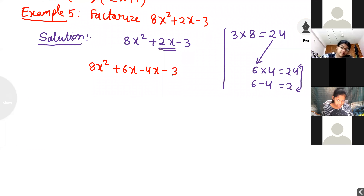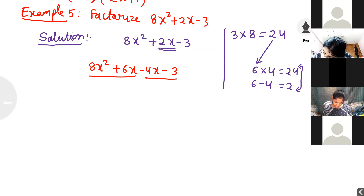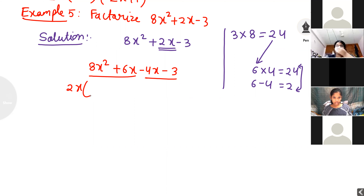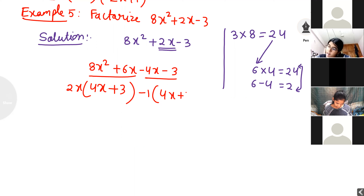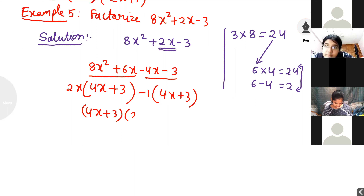I write 8x squared plus 6x minus 4x minus 3. Some students say they want to write plus — but 6 plus 4 is 10, not 2; we need subtraction to get 2. In the first group, 2x is common: 2x times (4x plus 3). For the second group, there is no variable common, so I take minus 1 common — all signs in the second group change, giving minus 1 times (4x plus 3). Both brackets are the same. The answer is (4x plus 3)(2x minus 1).